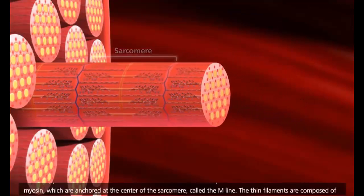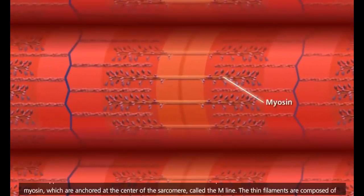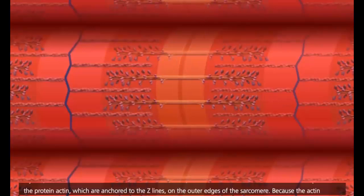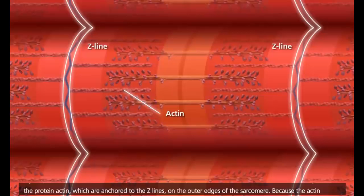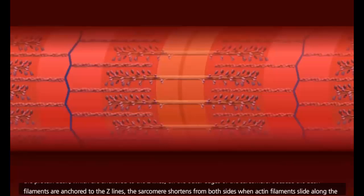The thick filaments are myosin, which are anchored at the center of the sarcomere, called the M-line. The thin filaments are composed of the protein actin, which are anchored to the Z-lines on the outer edges of the sarcomere. Because the actin filaments are anchored to the Z-lines, the sarcomere shortens from both sides when actin filaments slide along the myosin filaments.